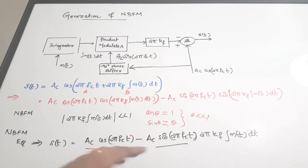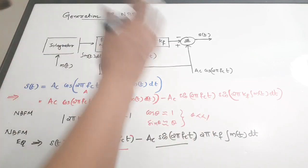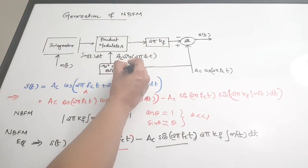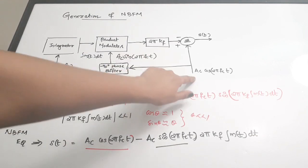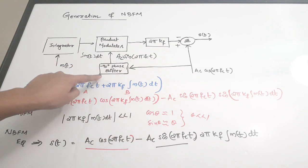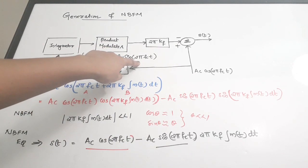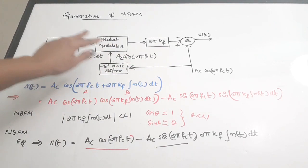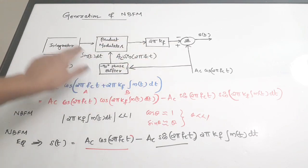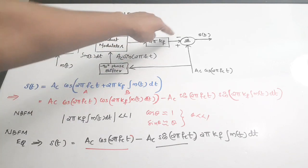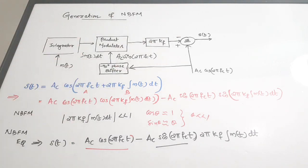To summarize narrow band FM generation: the carrier ac cos(2π fc t) is fed to a phase shifter to produce a sin term. The modulating signal is integrated, and the product of these two is multiplied by 2π kf. This result is applied to the negative terminal of the summing unit, giving us the complete narrow band frequency modulated wave.